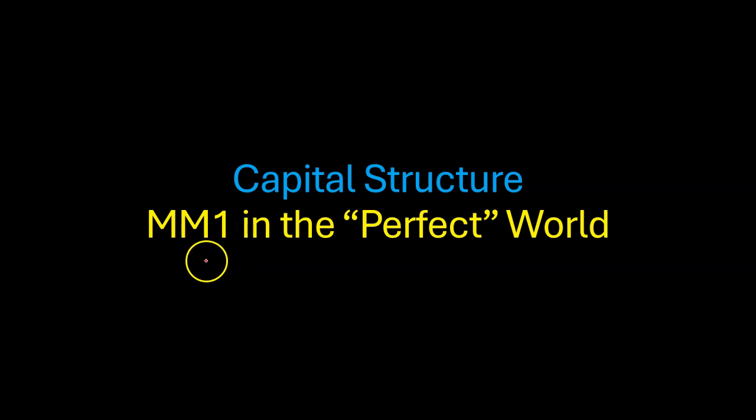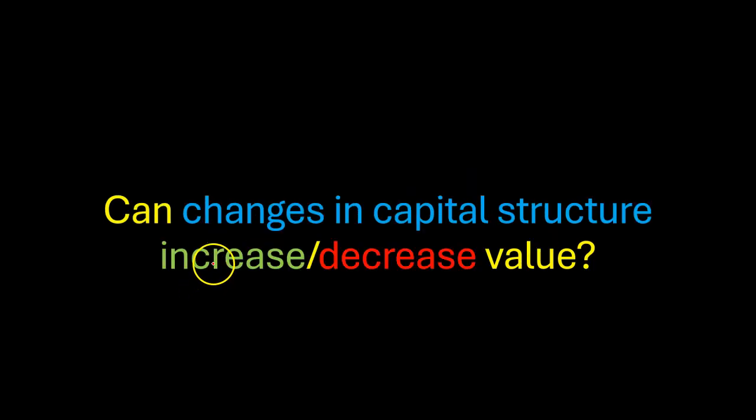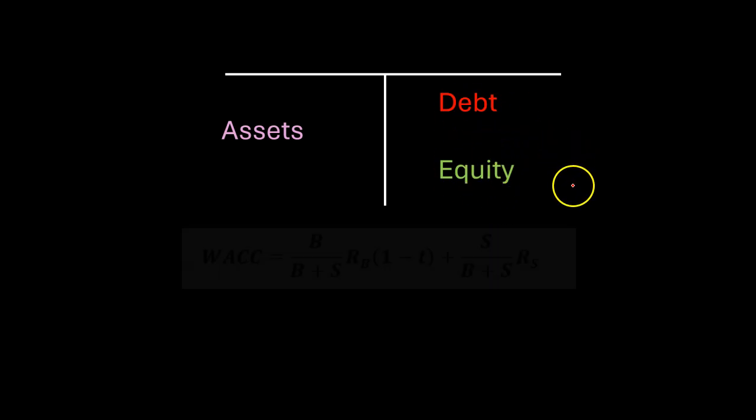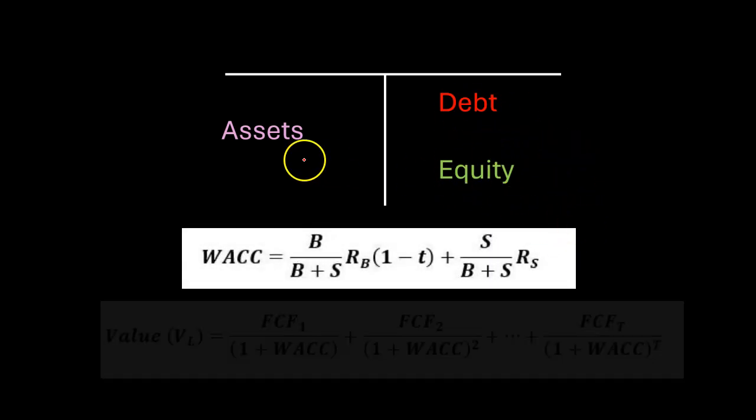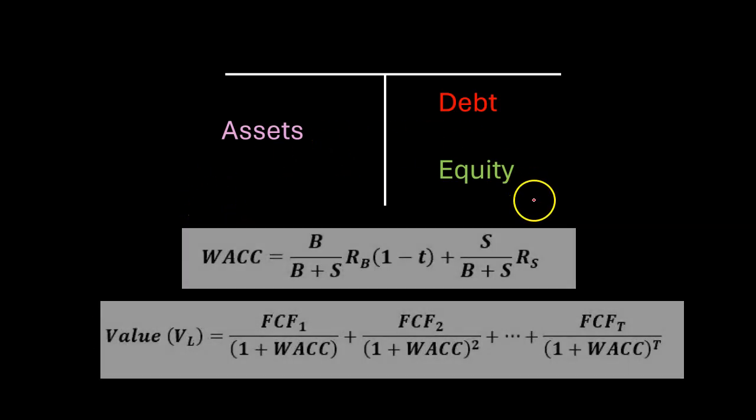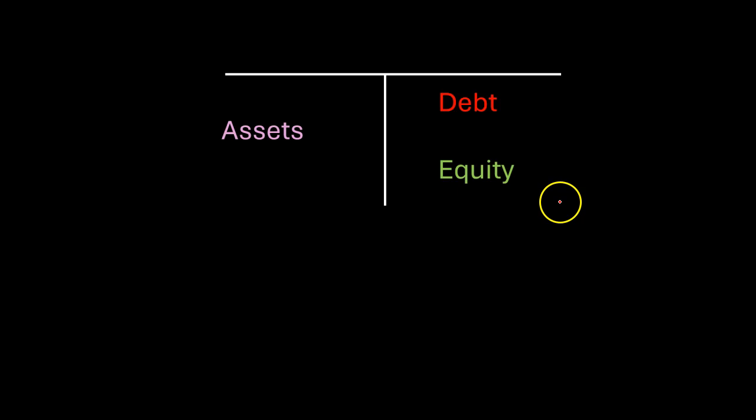Modigliani and Miller are two very famous financial economists who essentially asked the following question: Can we structure capital so that our WACC is minimized and therefore the value of our assets or the value of the firm is maximized? And what they ended up saying is that no, under certain assumptions, capital structure does not matter.